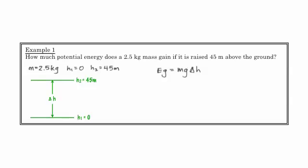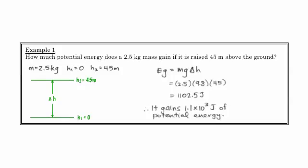Well, gravitational potential energy is mg delta h. And when we sub these numbers in, we get 1,102.5 joules, which we can of course adjust. It gains 1.1 times 10 to the 3 joules of potential energy, just by raising it 45 meters.